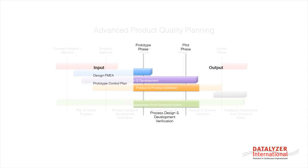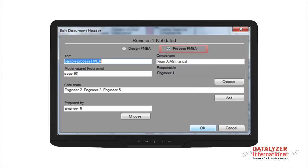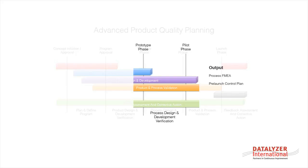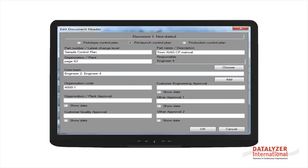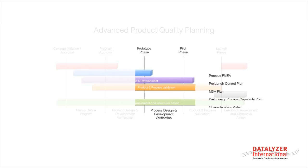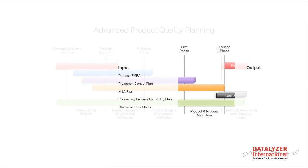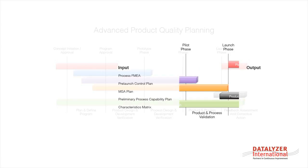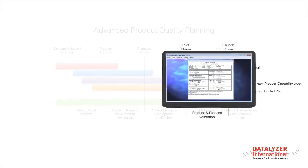The next phase is the process design and development. During this phase, the team will make a process FMEA and a pre-launch control plan, and will plan the MSA and the process capability study. When the process design is ready, the next phase is the pilot phase where the product and process validation will be performed. During this phase, the MSA and process capability studies will be made.